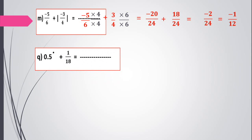0.5 recurring plus 1 over 18. Using your calculator, 0.5 recurring equals 5 over 9. So we have 5 over 9 plus 1 over 18. We can make the common denominator 18 by multiplying the first number up and down by 2. It becomes 10 over 18 plus 1 over 18, which equals 11 over 18. This is already in simplest form.